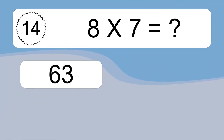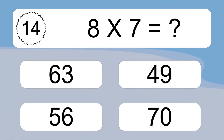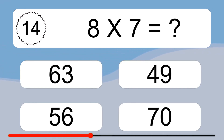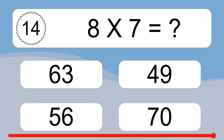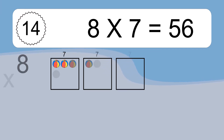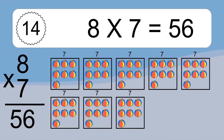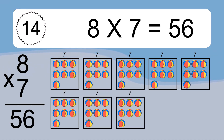8 times 7 equals what? 8 times 7 equals 56. We have 8 boxes, and each box has 7 colorful balls inside. If you count all the balls in all the boxes together, you will have 8 times 7 balls. This equals 56 balls.